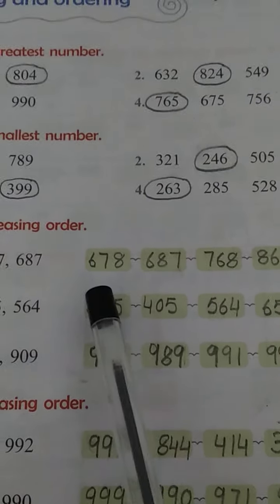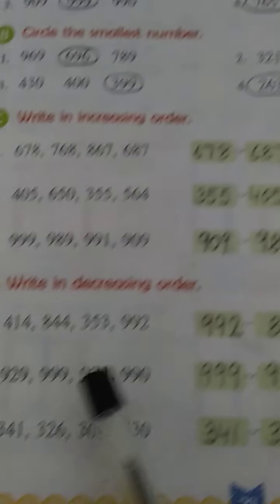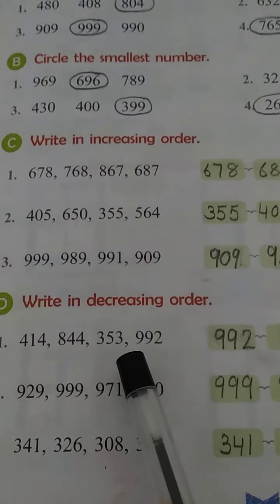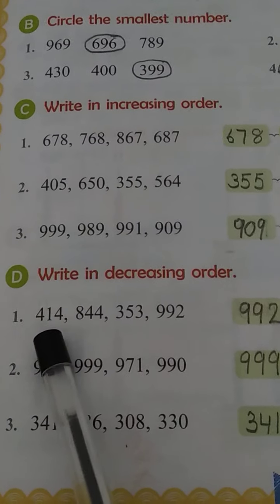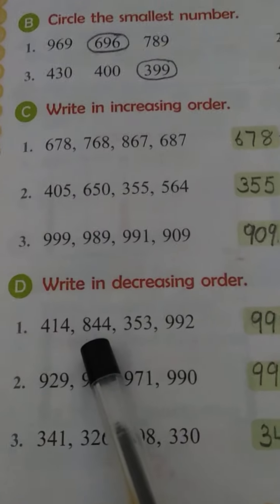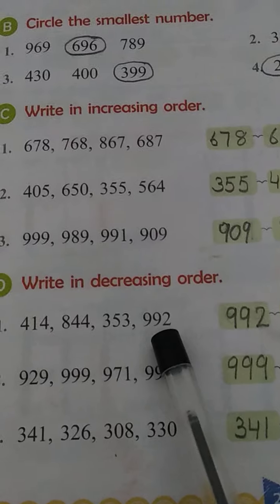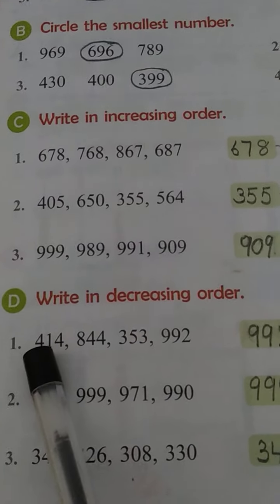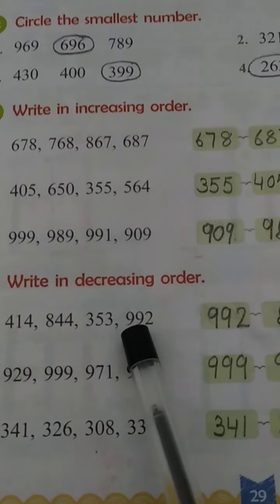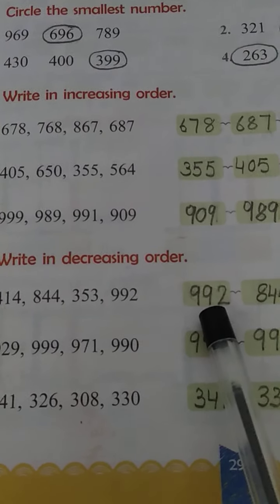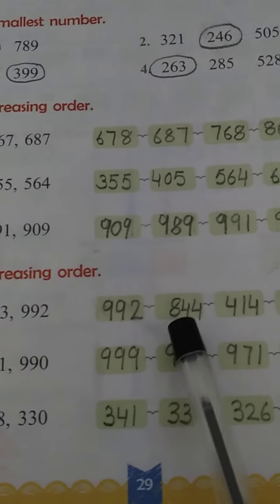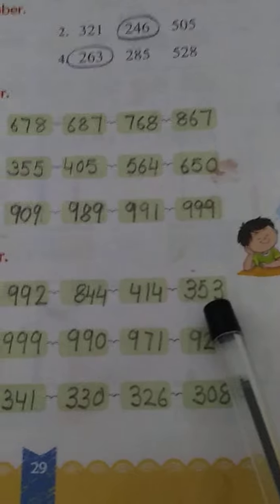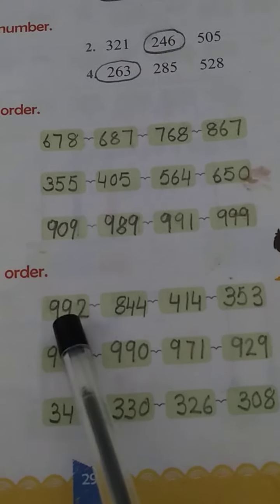So now we have arranged the numbers in increasing or ascending order. Decreasing order is just the opposite — we arrange numbers from the biggest to the smallest. Let's do the first question with numbers 414, 844, 353, and 992. Looking at the hundreds place: 4, 8, 3, 9. So in decreasing order: 992, then 844, then 414, and the smallest is 353.